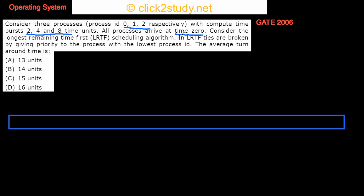Consider the Longest Remaining Time First (LRTF) scheduling algorithm — the process with the longest remaining time gets into the CPU first. For ties, priority is given to the process with the lowest process ID. So if two processes have the same remaining time and that is the longest, you break the tie by giving priority to the process with the lowest process ID.